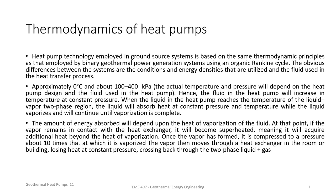Now, the thermodynamics of heat pumps. Heat pump technology employed in ground source systems is based on the same thermodynamic principles as that employed by binary geothermal power generation systems, using an organic Rankine cycle. An organic Rankine cycle works by having water heat or some kind of external heat heat a chemical compound that has a lower boiling point than water, which turns it into gas at a lower cost than energy. Approximately zero degrees Celsius and about 100 to 400 kilopascals, which is the actual temperature and pressure, will depend on the heat and the pump design of the fluid used in the heat pump. Hence, the fluid in the heat pump will increase in the temperature at constant pressure. When the liquid in the heat pump reaches the temperature of the liquid vapor two-phase region, the liquid will absorb the heat at a constant pressure and temperature while the liquid vaporizes and will continue until its vaporization is complete.